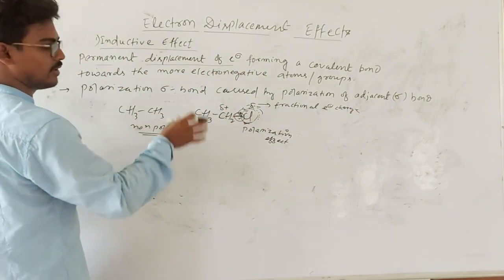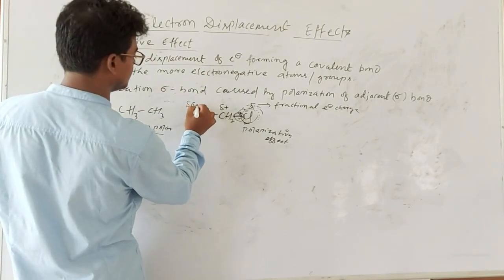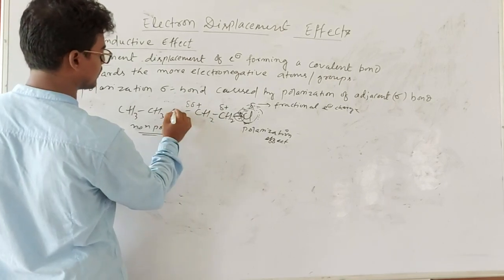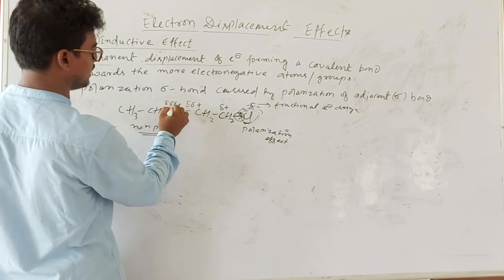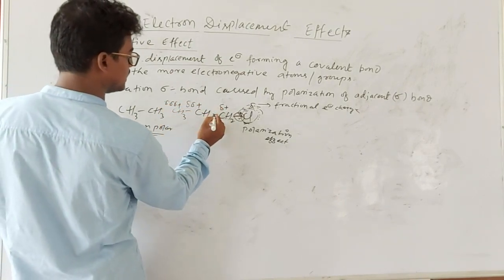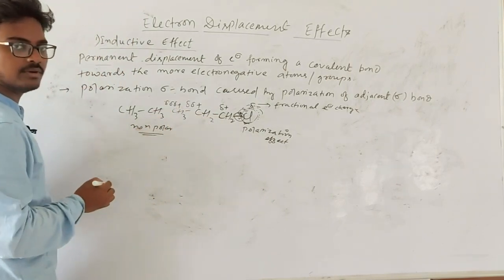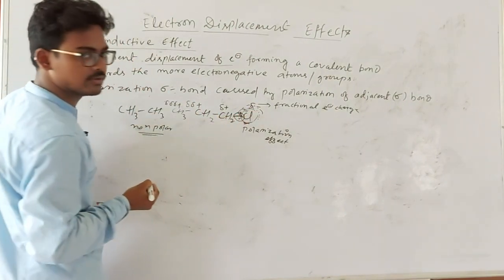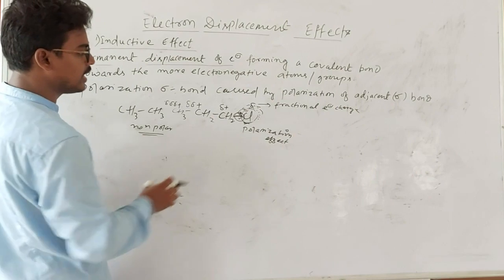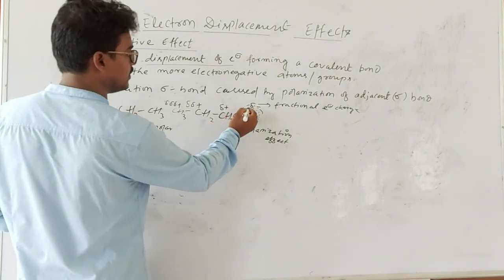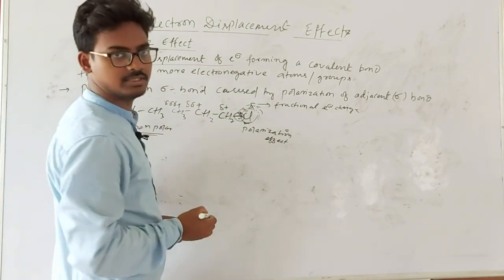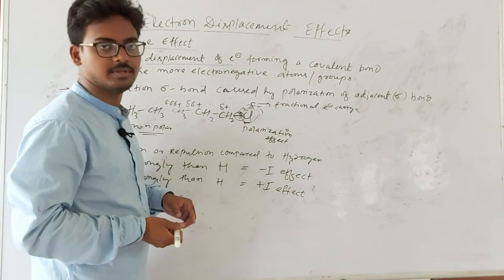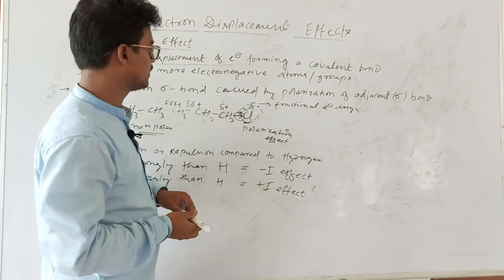As the number of bonds increases along the chain, the inductive effect decreases. The next carbon becomes delta-delta positive (δδ⁺), and the one after that delta-delta-delta positive (δδδ⁺). This shifting of electrons causes a polarization effect, which develops partial negative and partial positive charges between atoms due to the delocalization of electrons.